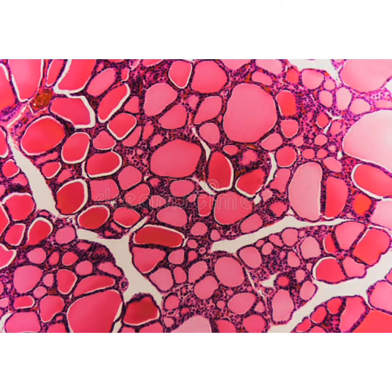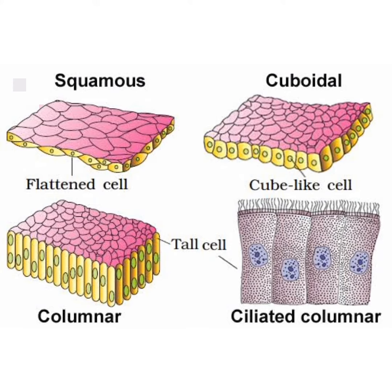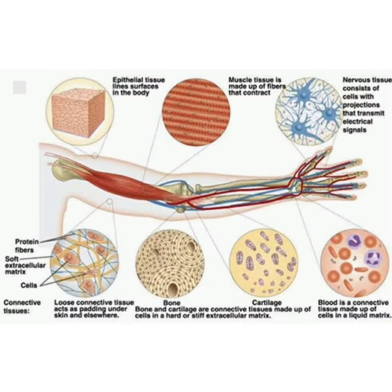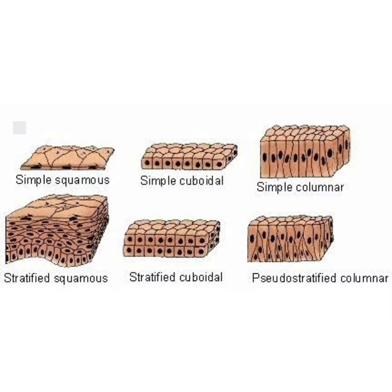Next, connective tissues. Blood cells, areolar tissues, and adipose tissue are some examples of connective tissues. Major functions of connective tissue include binding and supporting, protecting, insulating, storing reserve fuel, and transporting substances within the body. Connective tissues can have various levels of vascularity.